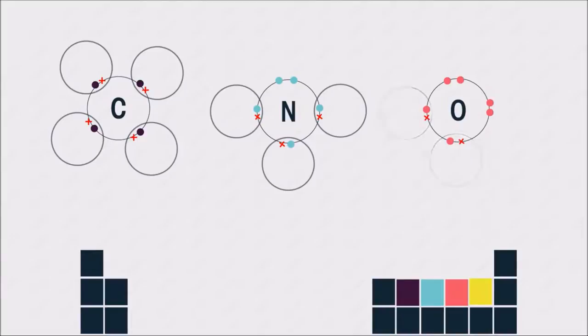Oxygen has six electrons in its outer shell. It can bond with two hydrogen atoms to share two more electrons. It now has a full outer shell of eight electrons.